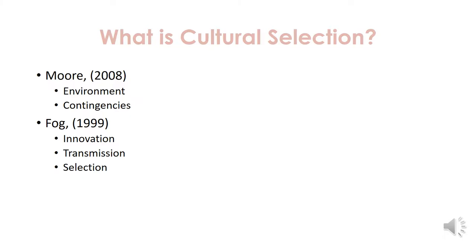What is cultural selection? Moore discussed cultural selection on the cultural level, stating that the cultural level concerns the selection of cultural practices by the environment during the lifetime of the culture. Moore also discusses contingencies that need to occur in order for cultural selection to happen, involving various practices solving enduring problems related to the welfare and survival of the group as a whole.